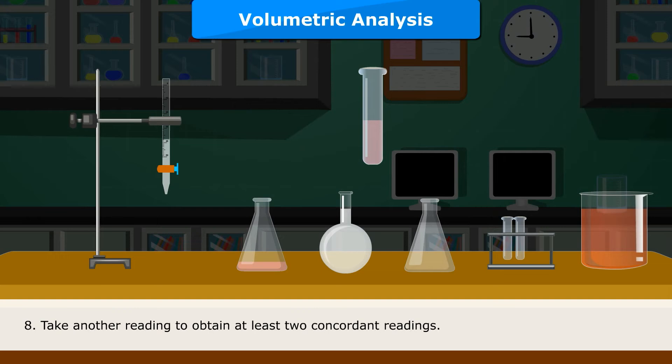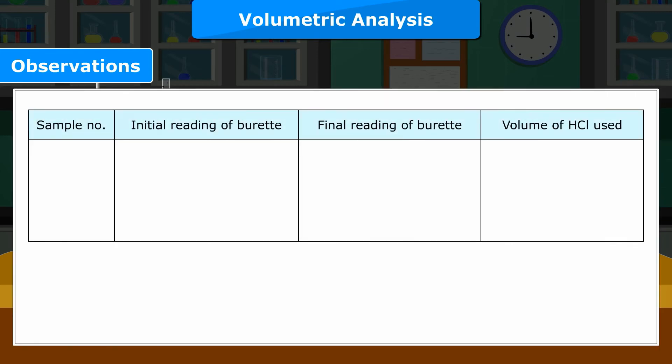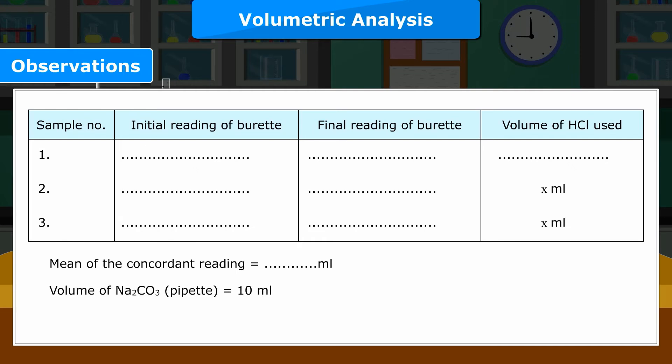Take another reading to obtain at least 2 concordant readings. Observations: Sample number, Initial reading of Buret, Final reading of Buret, Volume of HCL used. 1, 2: X milliliter, 3: X milliliter. Mean of the concordant reading is equal to dash milliliter. Volume of Na2CO3 pipet is equal to 10 milliliter. Volume of HCL used is equal to X milliliter.